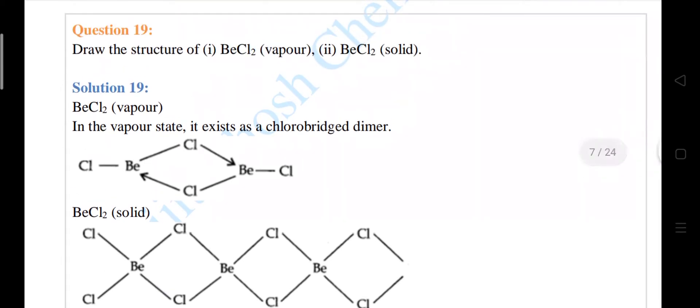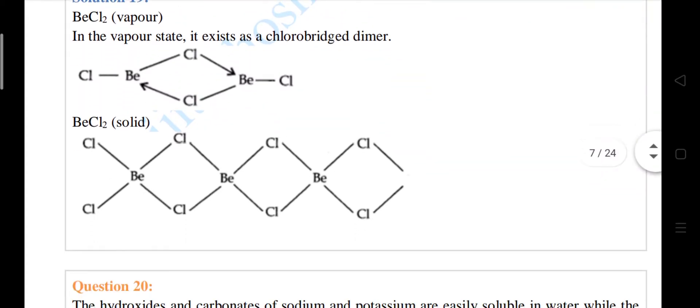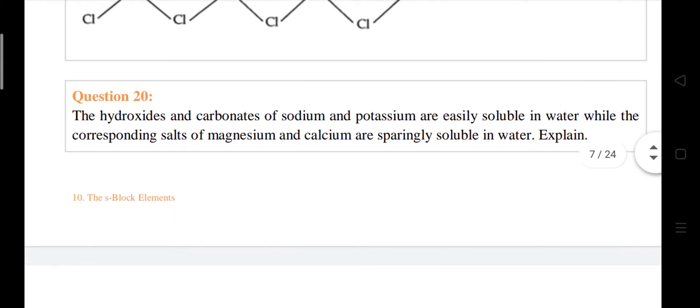Next is question number 19. This one is a very good question, because you have to write the structures of BeCl2 in vapor and solid state. See the difference between these two, the bridging bond between these two.